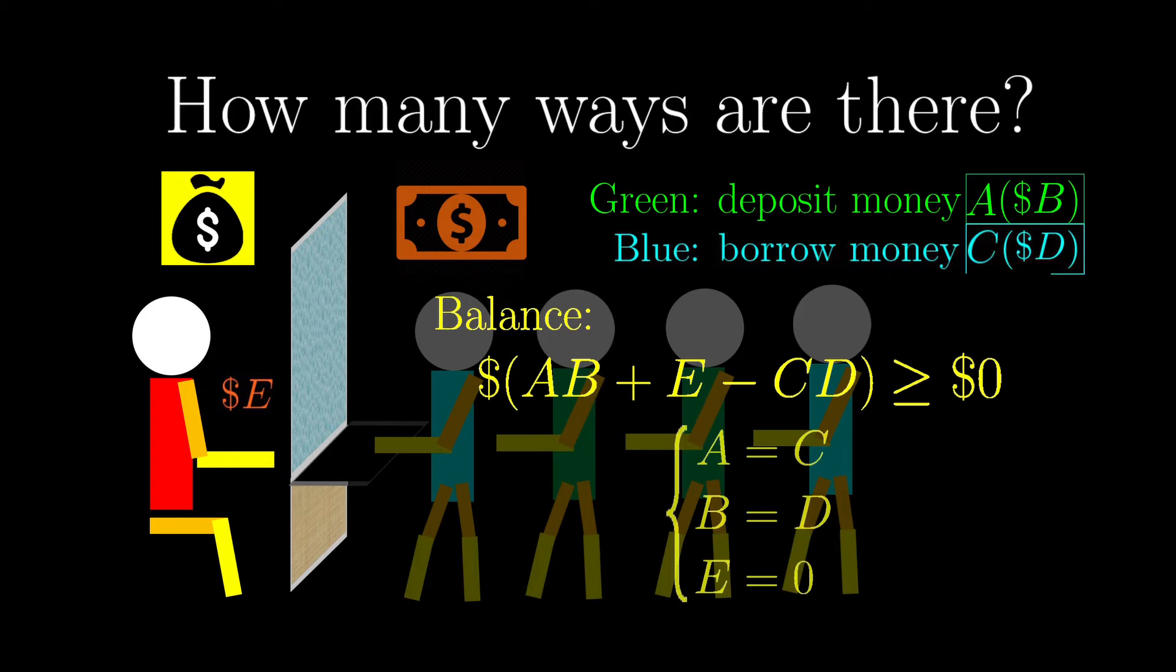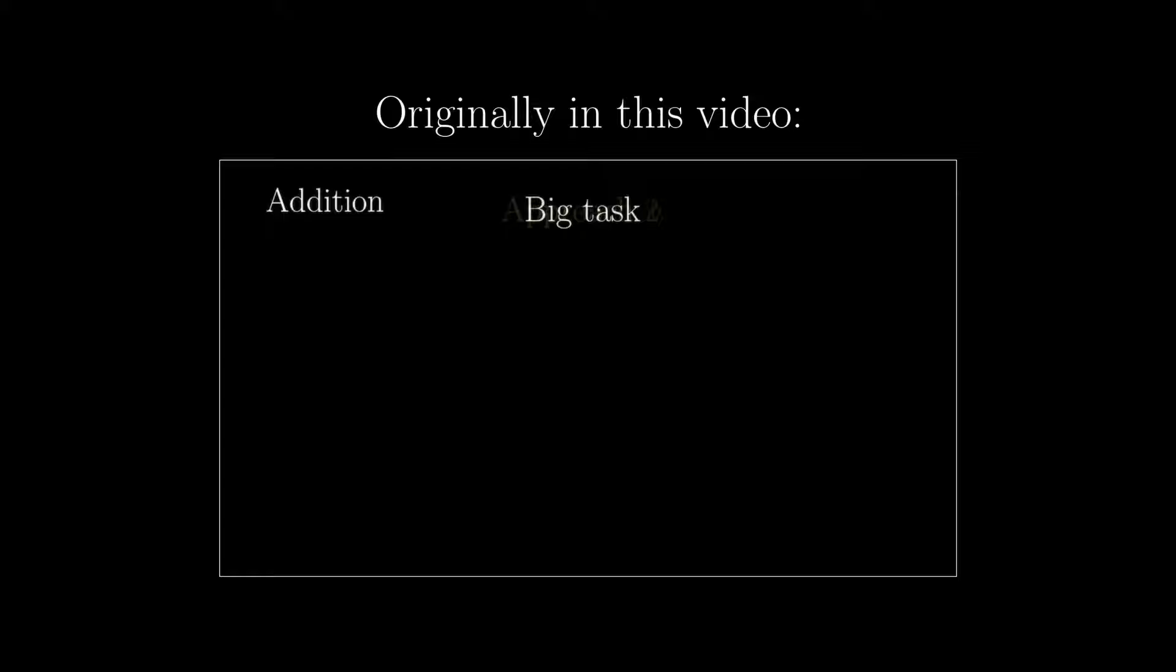However, if we have some constraints on the variables, like this one, then the problem can be solved. In fact, this particular constraint is the situation that we will discuss in the video after the next one. You might want to try the problem under this constraint before I reveal the solution later on in the series.